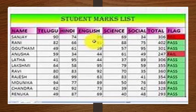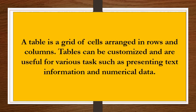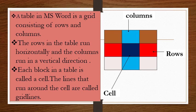Can you say what is this? Yes, this is a Student Marklist. Do you know how to make this? Come, let's see. First, let us see what is a table. A table is a grid of cells arranged in rows and columns. Tables can be customized and are useful for various tasks such as presenting text information and numerical data. A table in MS Word is a grid consisting of rows and columns.